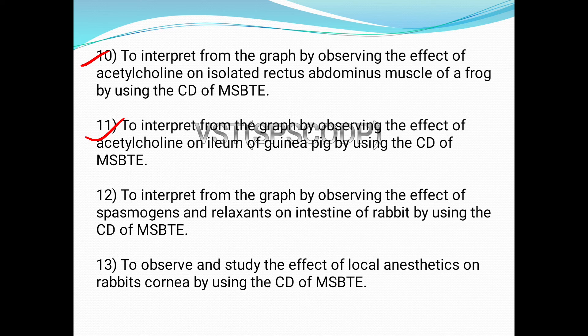The eleventh experiment is to interpret from the graph by observing the effect of acetylcholine on the ileum of a guinea pig using the CD of MSBT. The twelfth experiment is to interpret from the graph by observing the effect of spasmogenics and relaxants on the intestine of a rabbit using the CD of MSBT. You have to understand the mechanism of spasmogenics such as acetylcholine and barium chloride, and interpret from the graph and observations from the CD of MSBT.